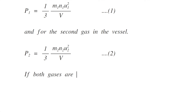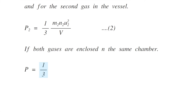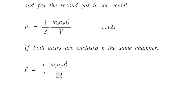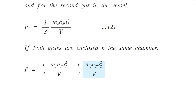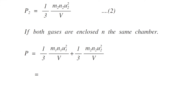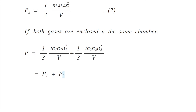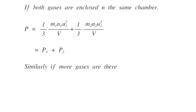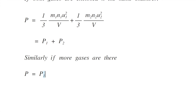If both gases are enclosed in the same chamber, then total pressure P is equal to 1/3 m1 n1 u1 squared divided by V, plus 1/3 m2 n2 u2 squared divided by V. That is equal to P1 plus P2. Similarly, if more gases are there, then it will be the combination of pressures of all the gases. And that is Dalton's law of partial pressure.